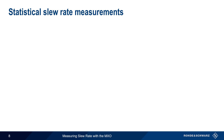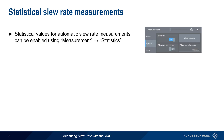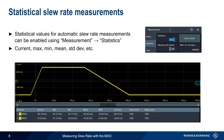Slew rate is often measured and reported as statistical values, and these can be enabled by choosing Statistics from the measurement screen. Statistical values of min, max, mean, standard deviation, etc. are all displayed at the bottom of the screen and are updated in real time. The Clear Results button can be used to clear and reset the statistical results.